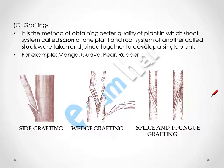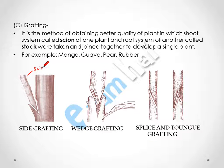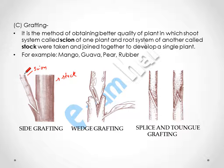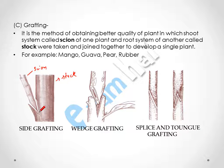Now grafting — it is the method of obtaining better quality plants. The shoot system is called the scion and the root system from another plant is called the stock. The scion from one plant and the stock from another plant are joined together and grown to get a better quality plant. They may or may not be of the same species, depending on the requirement.